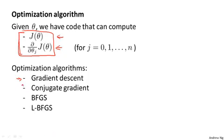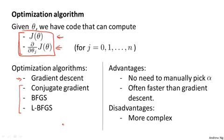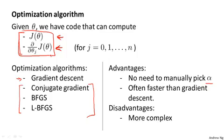The details of exactly what these three algorithms do is well beyond the scope of this course — in fact, you often end up spending many days or a small number of weeks studying these algorithms in a class on advanced numerical computing. But let me tell you about some of their properties. These algorithms have a number of advantages. One is that with any of these algorithms, you usually do not need to manually pick the learning rate alpha. You can think of these algorithms as having a clever inner loop called a line search algorithm that automatically tries out different values for the learning rate alpha and automatically picks a good learning rate alpha, so it can even pick a different learning rate for every iteration, and so you don't need to choose it yourself.